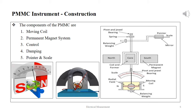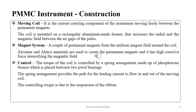The principal components of the PMMC equipment are moving coil, permanent magnet system, control unit, damping unit and pointer scale. The figures on this slide show the detailed schematic construction of the PMMC equipment. The moving coil is the current carrying component of the instrument, moving freely between the permanent magnets. The coil is mounted on a rectangular aluminum former that increases the radial anti-magnetic field between the air gaps of the poles.